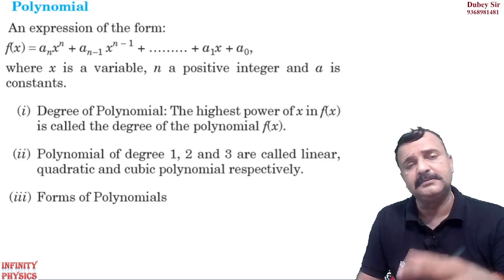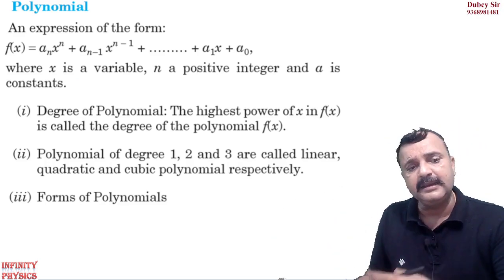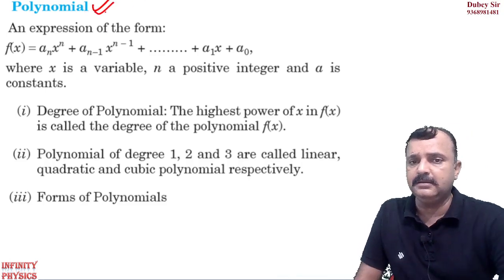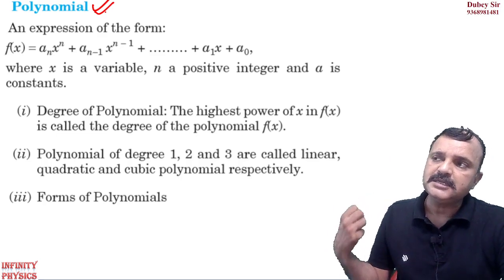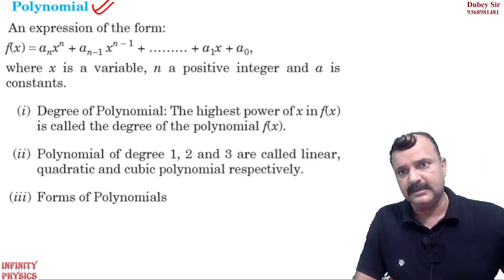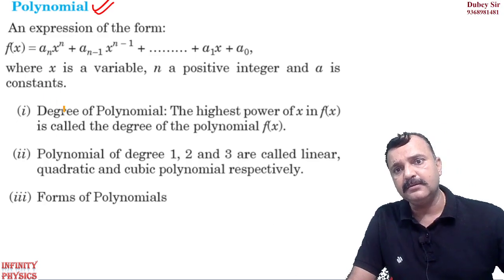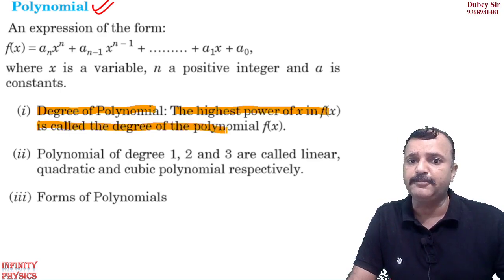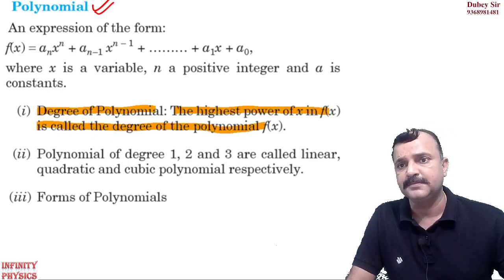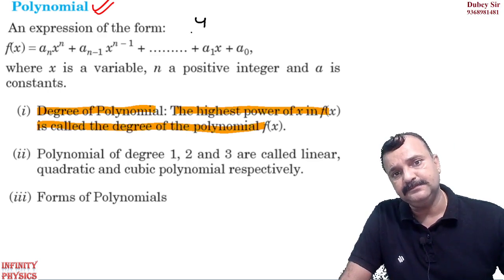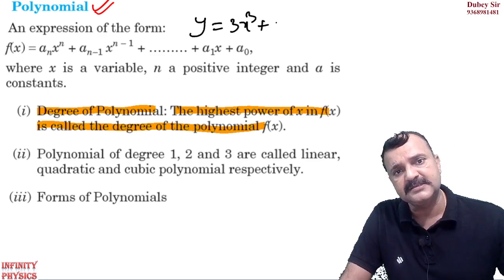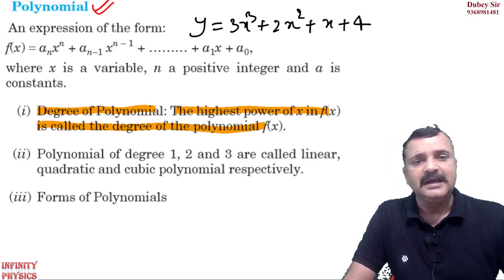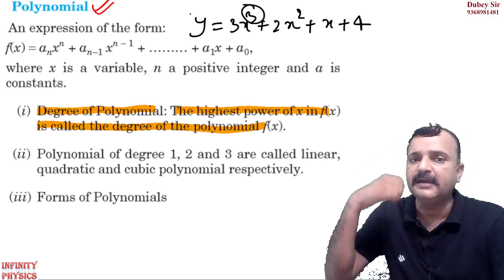So these are some algebraic equations which will be used in physics directly or indirectly. The second topic is polynomial. The degree of a polynomial means the highest power of x is called the degree of polynomial. For example, if y = 3x³ + 2x² + x + 4, the highest power of x is 3, so this is a degree 3 equation.